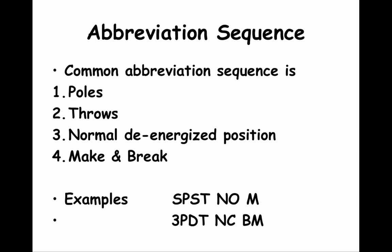When ordering relays, the common sequence for listing characteristics is: first the number of poles, followed by throws, followed by normal de-energized position, and then any make or break characteristics needed. For example, SPST-NO-M is a single pole single throw normally open relay that will make a circuit when energized. Another example is 3PDT-NC-BM, a three pole double throw normally closed relay that will break and make circuits when energized.